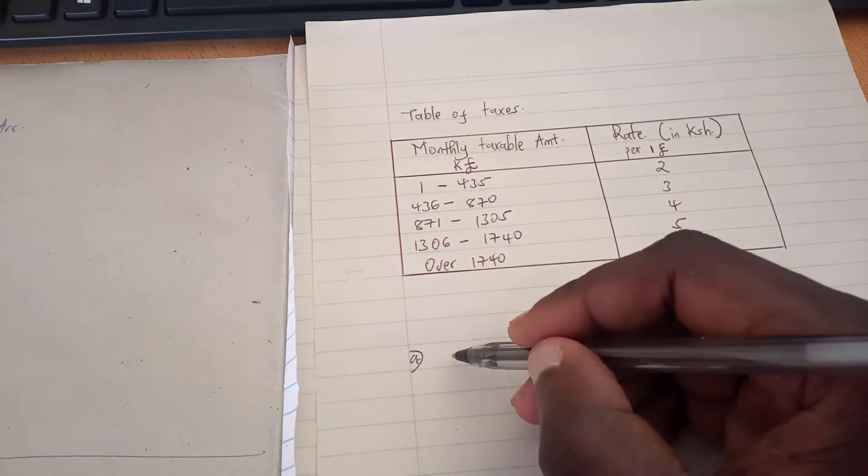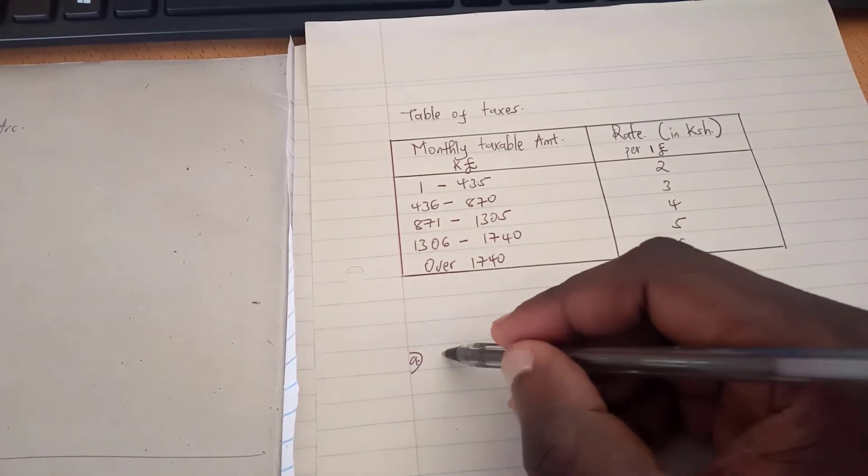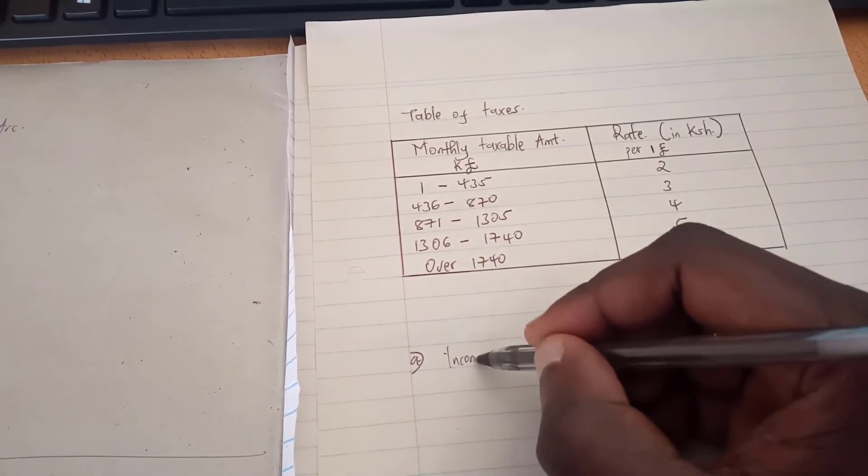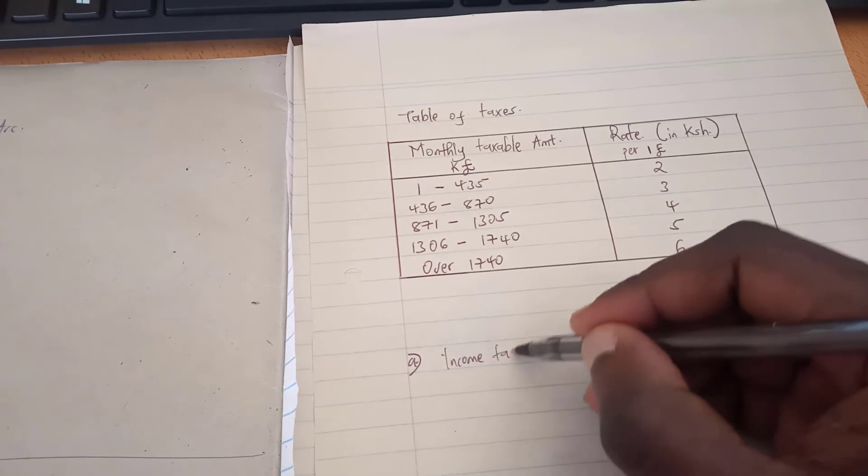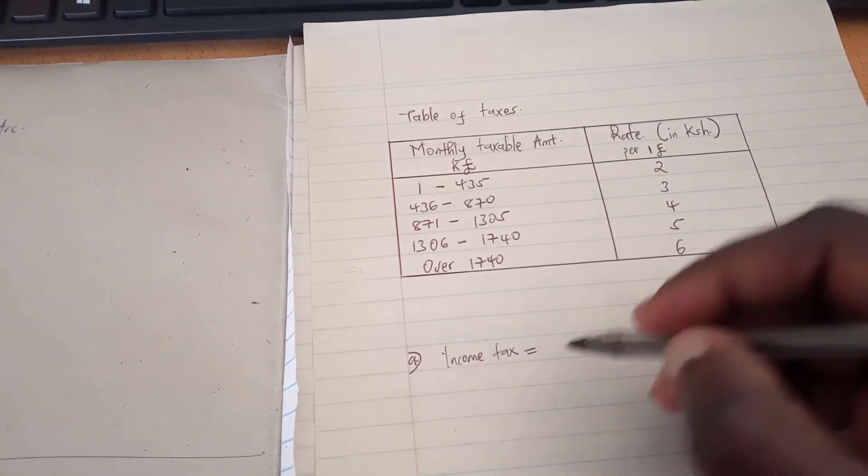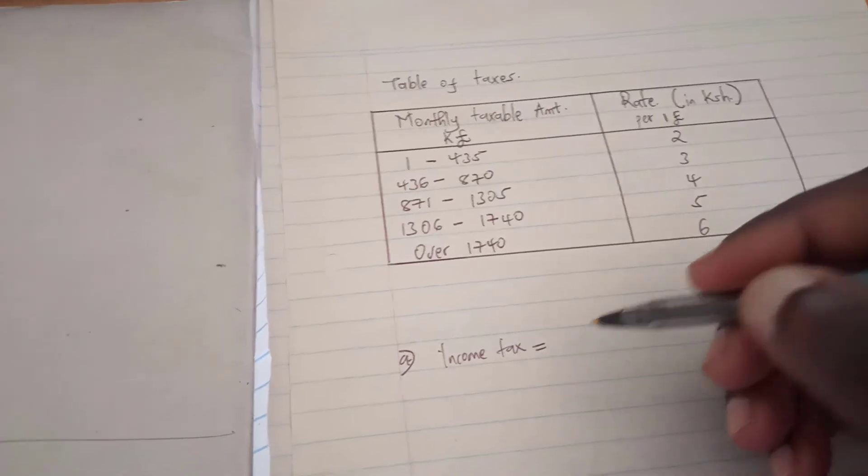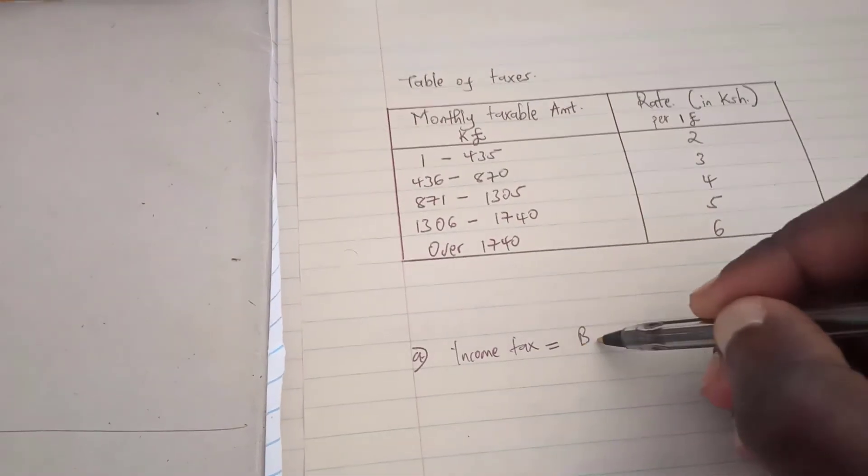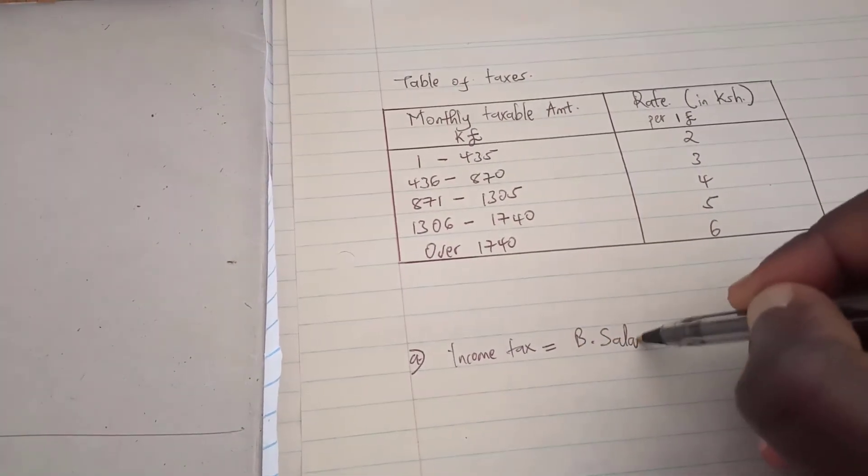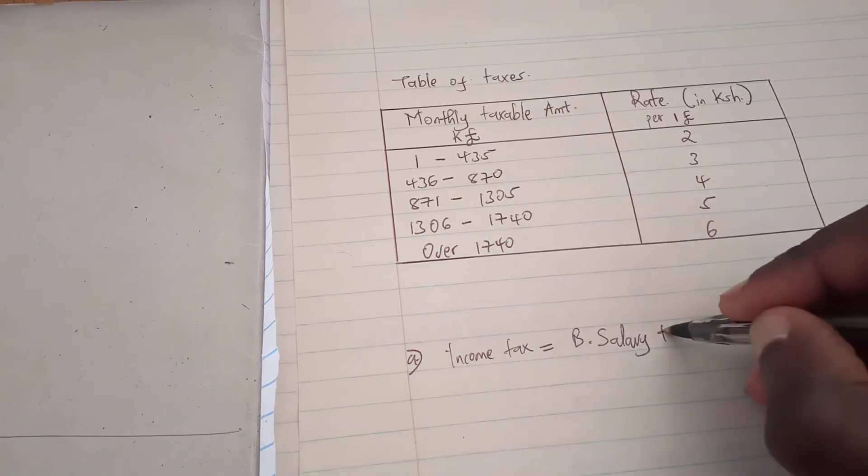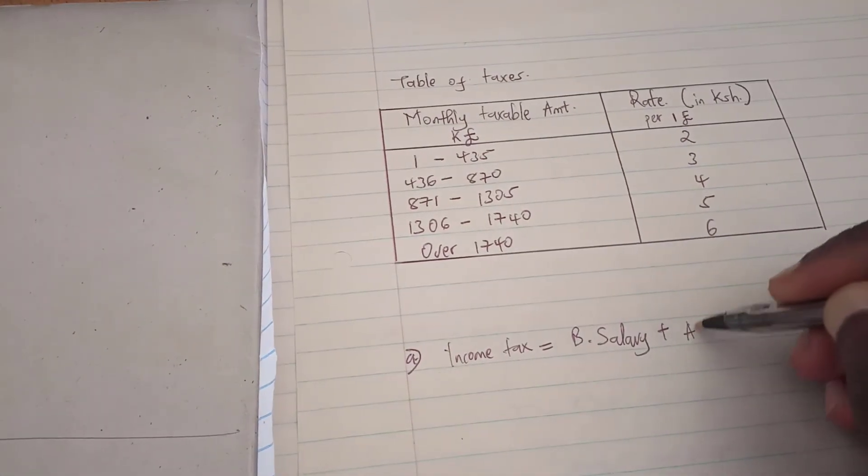And part A, in order to get the income tax, we have to make sure we take the basic salary and then we'll have to combine it with all the allowances.